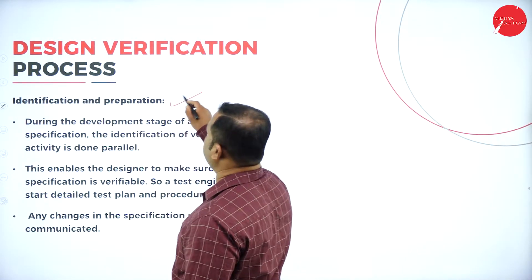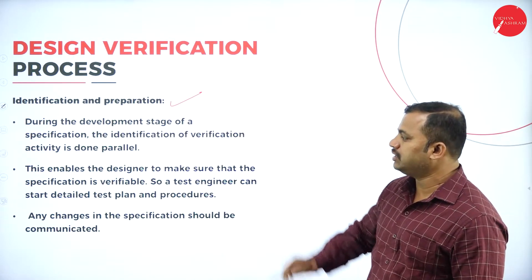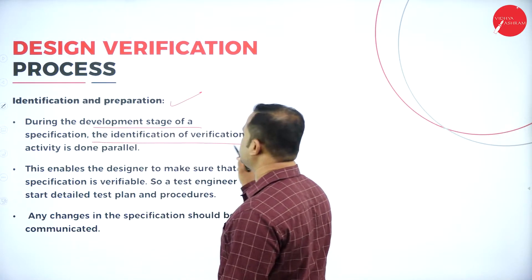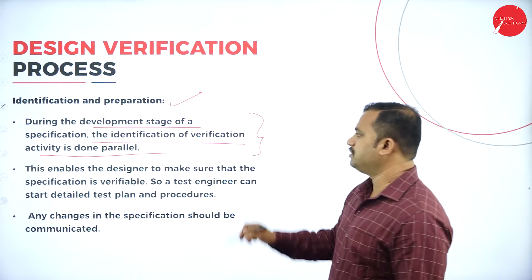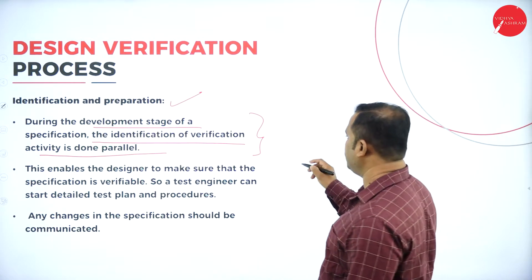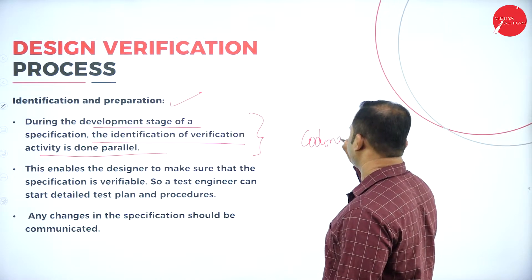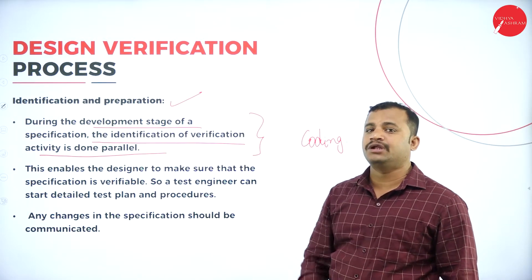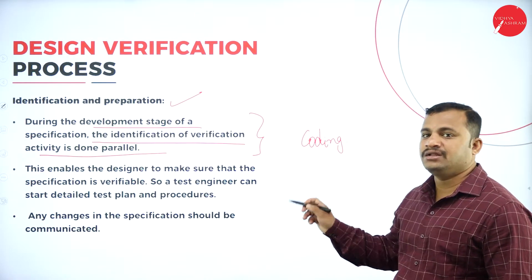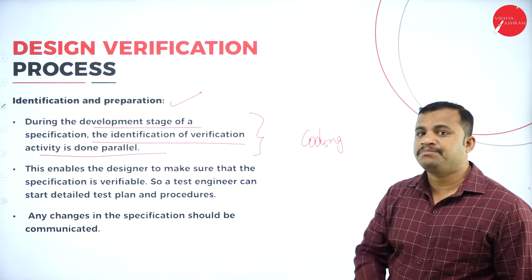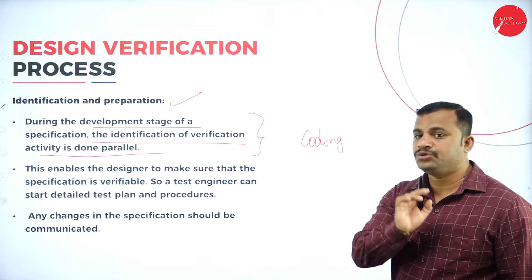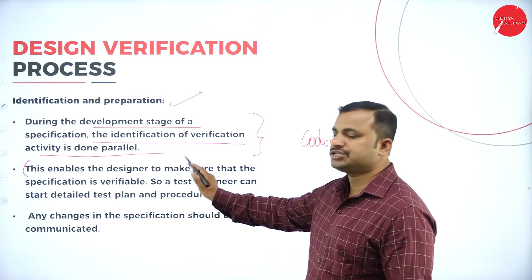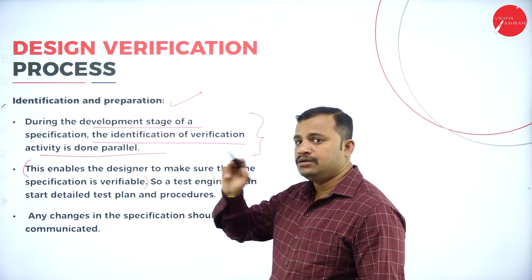The design verification process begins with identification and preparation. During the development stage, identification of a verification activity is done in parallel. During coding, the specification specified by the stakeholder is considered, and verification is done at the time of developer testing, also called unit testing. This enables the designer to make sure that the specification is verifiable.